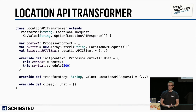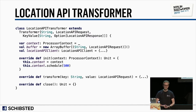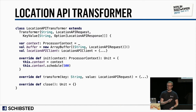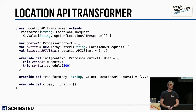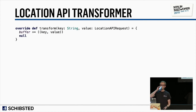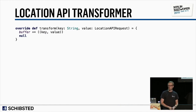To set up the transformer, we store the processor context from the init function and schedule punctuate to be called every 500 milliseconds. We also have a buffer where we keep events until we look them up, and a location API HTTP client that takes request objects and returns response objects. The transform function is simple: every time we see a new event in the stream, we add it to the buffer and return null.